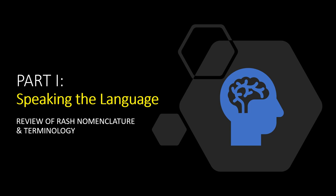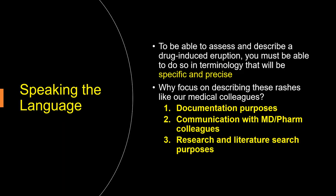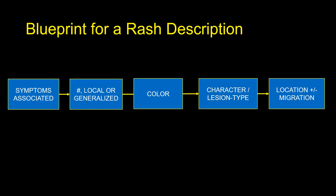Let's begin by reviewing basic rash nomenclature and terminology to improve our ability to describe these reactions. Not only do we want to describe eruptions more accurately, but improved communication benefits documentation, other clinicians, and research purposes. The blueprint for a complete description of a drug eruption should include: the symptoms associated if any; the number of lesions or whether the rash is localized or generalized; the colors involved; the character or lesion type; and the location plus any migration pattern.